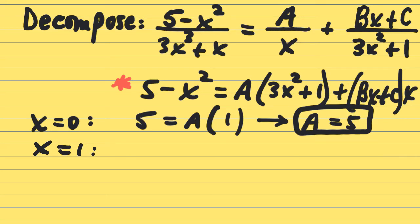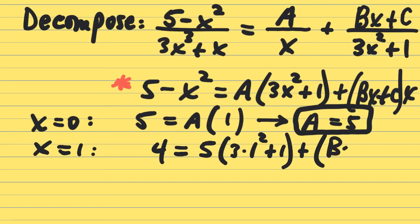Go back to the equation that's got the little red asterisk by it. Five minus one squared equals a, which is five, times three times one squared plus one plus b times one plus c times one. Every x in the equation marked with the red asterisk, plug a one in for every x you see. We can replace the a with five because we solved it just a minute ago.